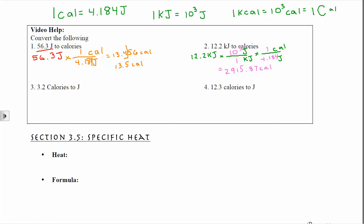Now for sig figs: 12.2 has three sig figs; the conversion factors are exact so I ignore them. I round to three sig figs — the 5 rounds the 1 up — giving 2,920 calories. Do not write just 292, because that implies 2,000 rounds to about 200, which makes no sense. You need the trailing zero to hold that place, so the answer is 2,920 calories.